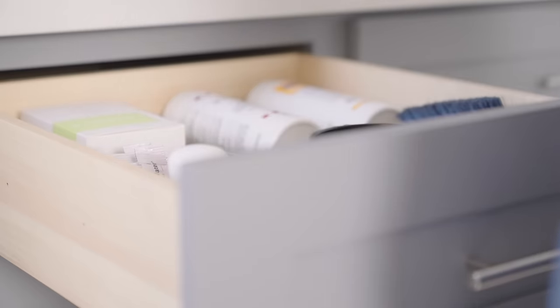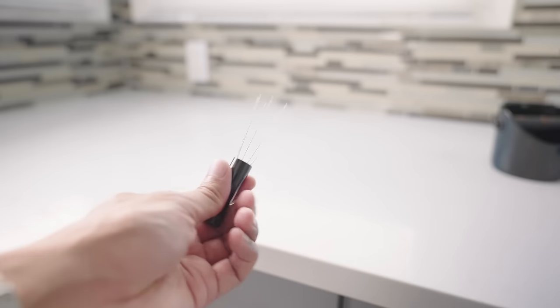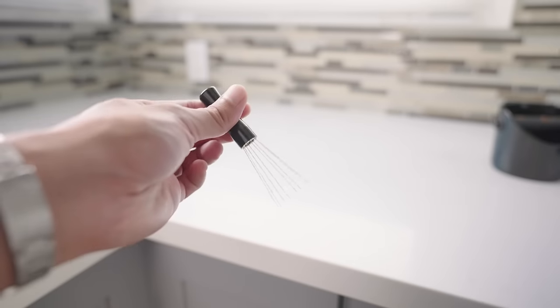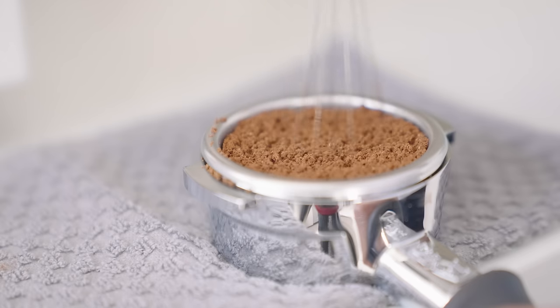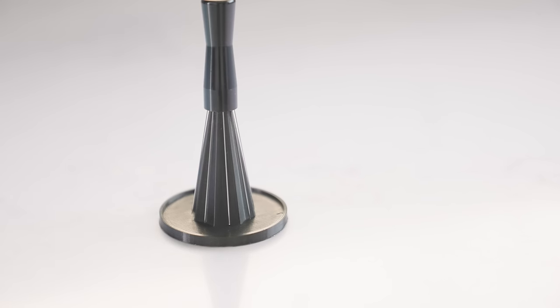Behind the grounds bin, we have the Fellow 12 ounce steaming pitcher. My WDT tool is from Ulta and is probably the best thing I've added to my setup. Using the Weiss distribution technique, espresso shots have been more consistent and I've resolved most of my channeling issues.